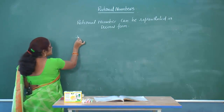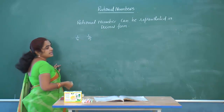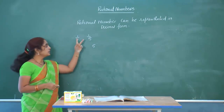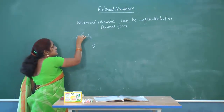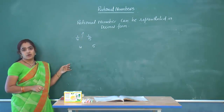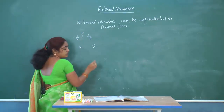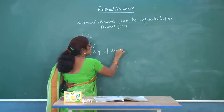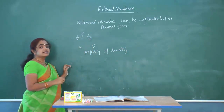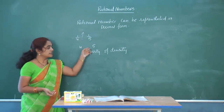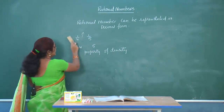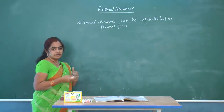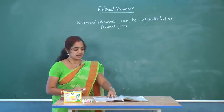Between any two rational numbers, there exist infinitely many rational numbers. For example, between 4 and 5, there are infinite rational numbers. This property is known as the property of density. Now, before going to find rational numbers between two rational numbers, let us see some challenges based on what we have discussed.